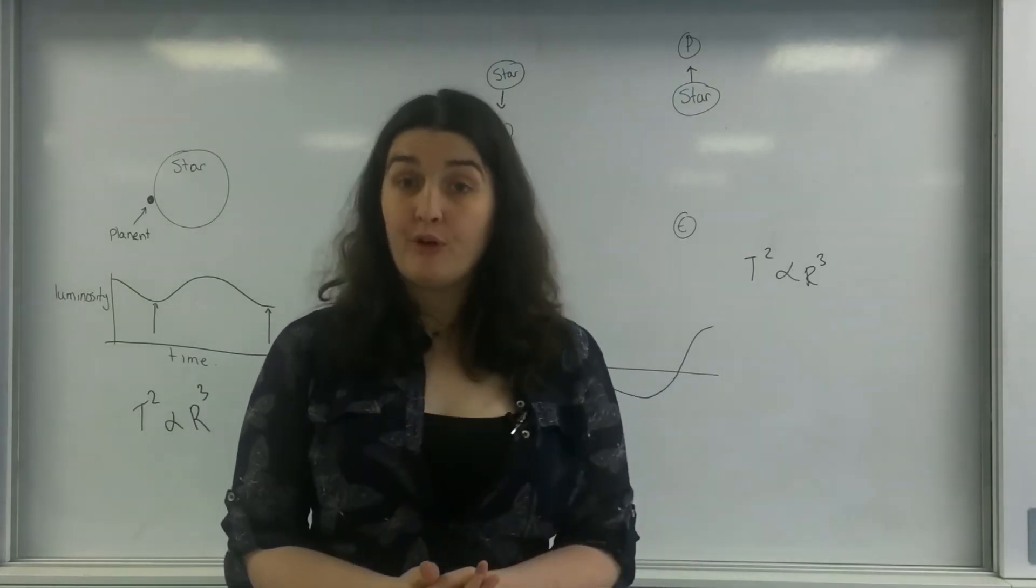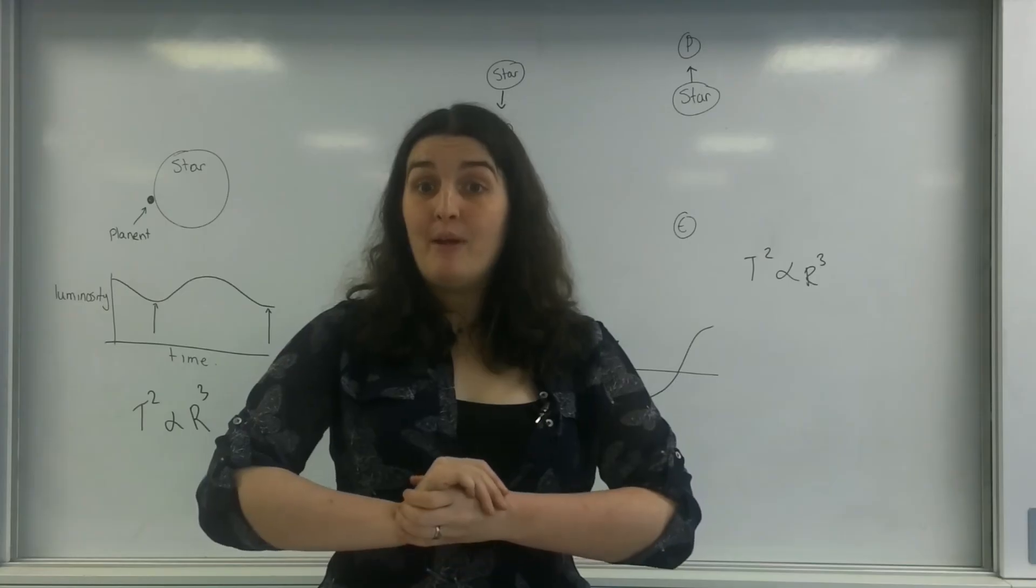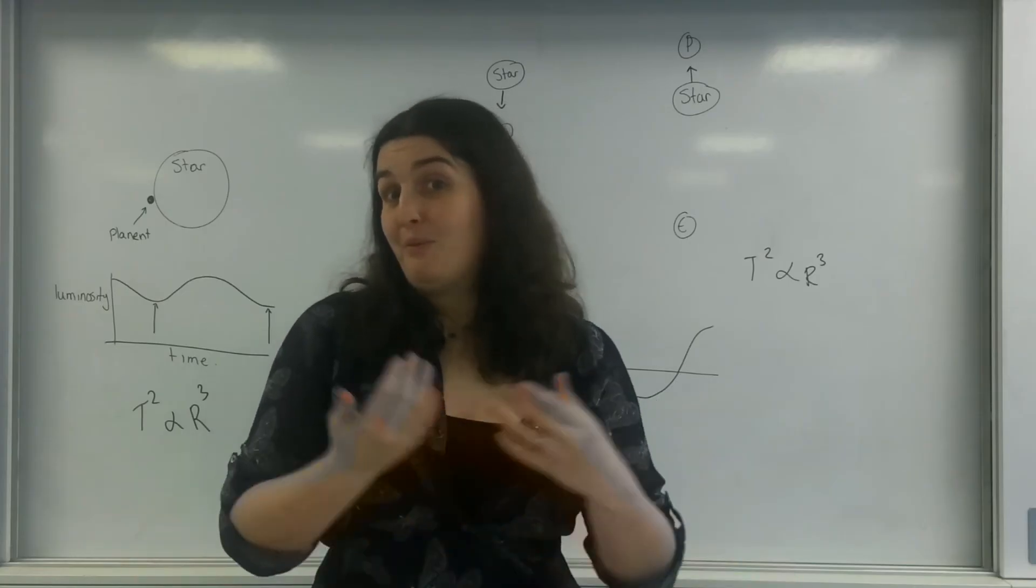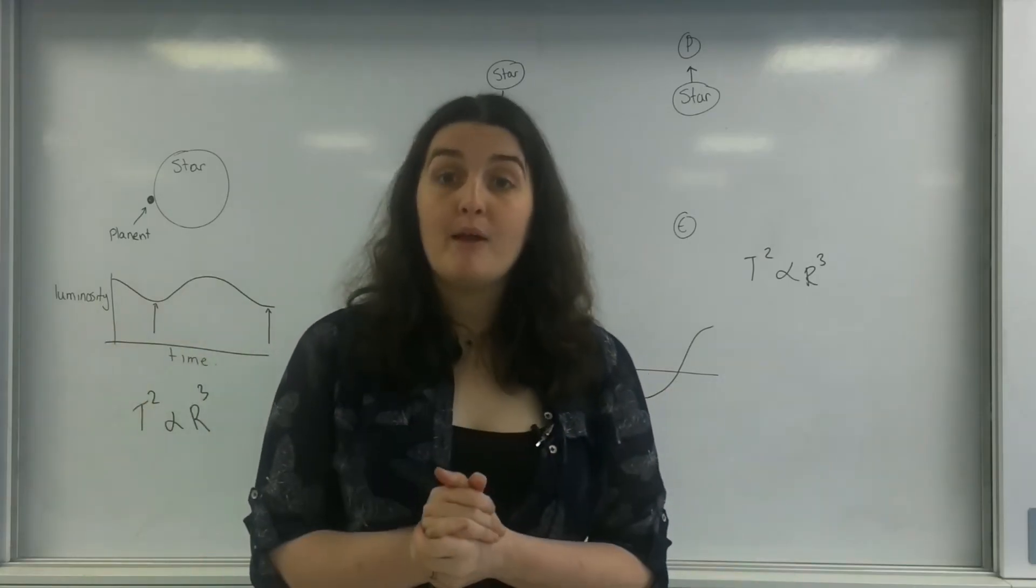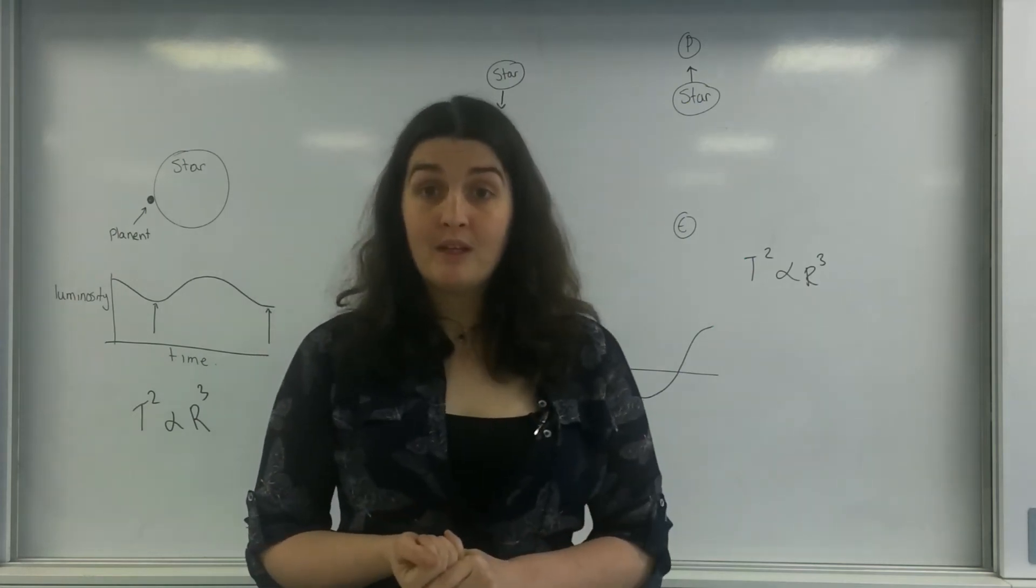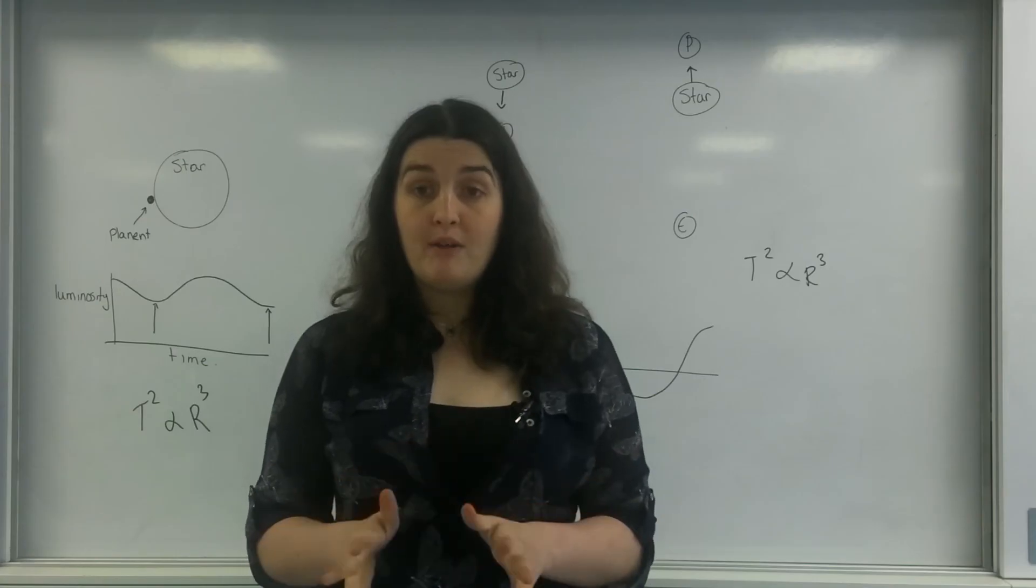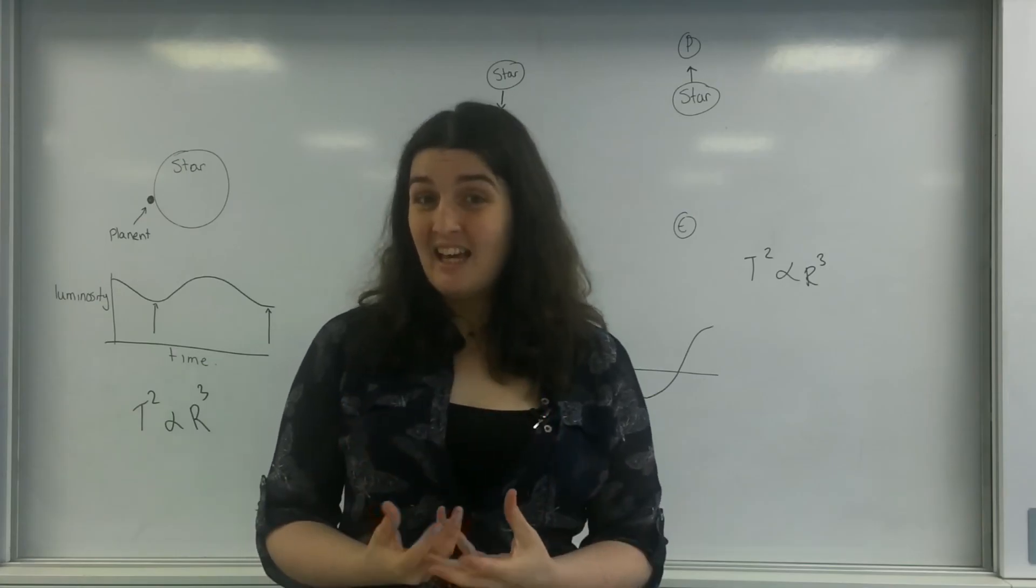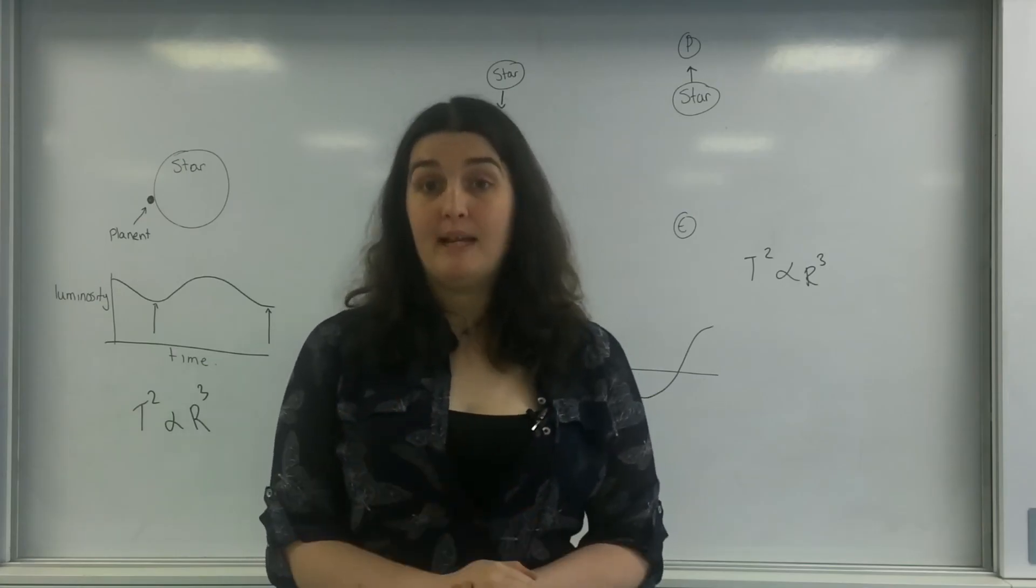Exoplanets are sort of the forefront of physics, looking at where we could inhabit in the long term if we're going to leave our solar system and understanding if we can find new life. So there are the two methods of being able to detect and search for exoplanets.